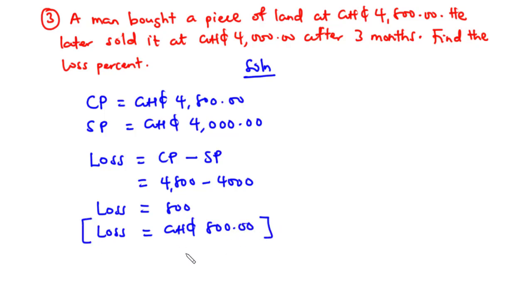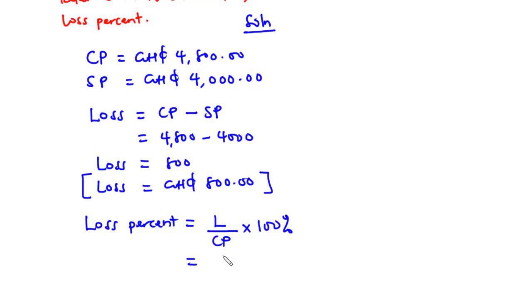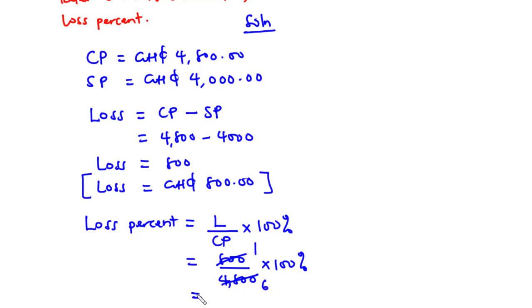Now let's find the loss percent: Loss% = (Loss / Cost price) × 100% = 800 / 4,800 × 100%. 800 goes into 4,800 six times, so 100 / 6 = 16.67%. The loss percent is 16.67%.